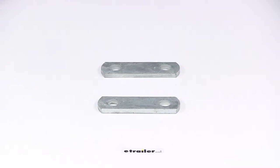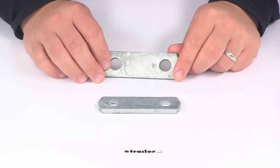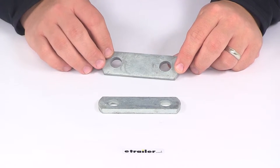Today we're taking a look at the CE Smith frame straps. Frame straps are designed to be used with U-bolts to secure accessories to your trailer frame. These particular frame straps are designed to fit two-inch frames.